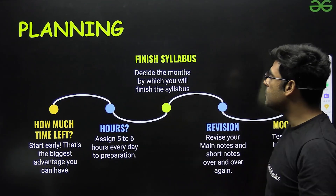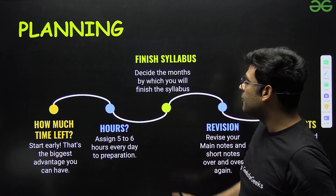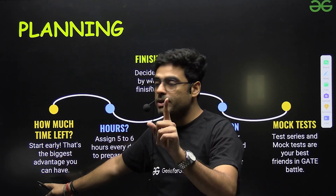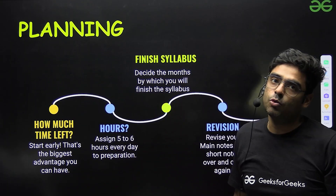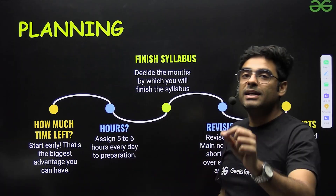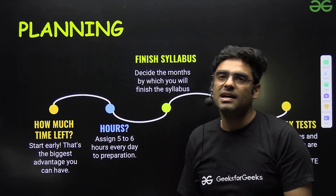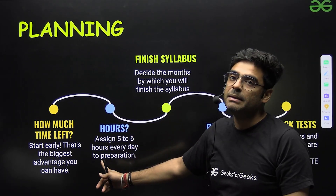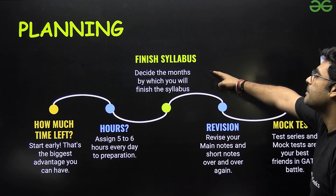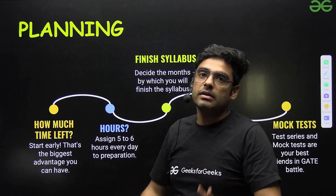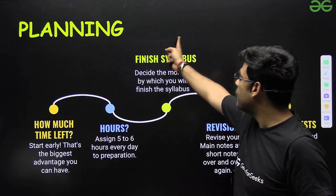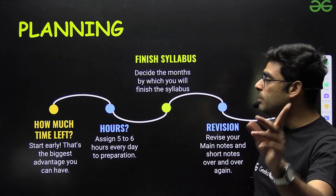Now the planning part. First, see how much time is left — and the rule always holds: start early, that is the biggest advantage you can have. Assign five to six hours daily specifically for GATE preparation — that will definitely give you a single digit rank. Also, finish the entire syllabus, because anything can be asked from any corner and you can't predict which concept will appear.